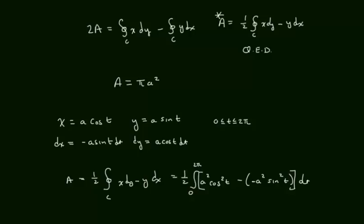This comes out to a squared over 2 times the integral from 0 to 2 pi. Cosine squared plus sine squared equals 1, so the integrand is just dt. This gives a squared over 2 times 2 pi equals pi a squared. Tell your friends at the next party that you can prove the area of a circle is pi r squared.